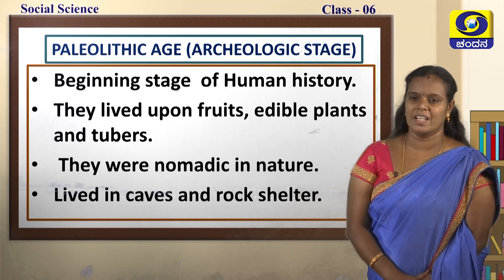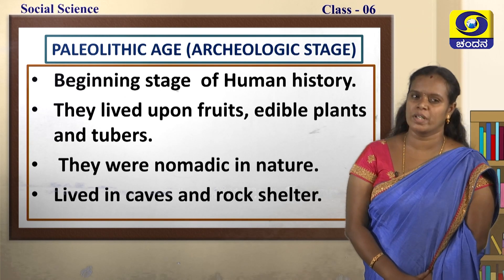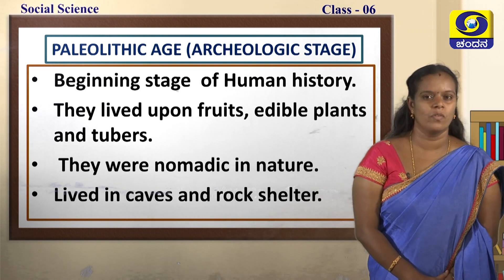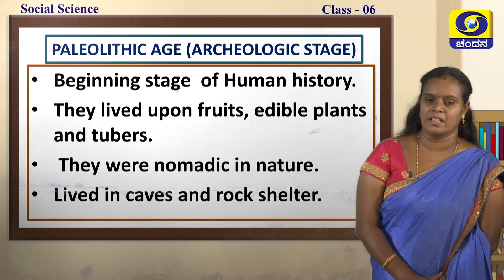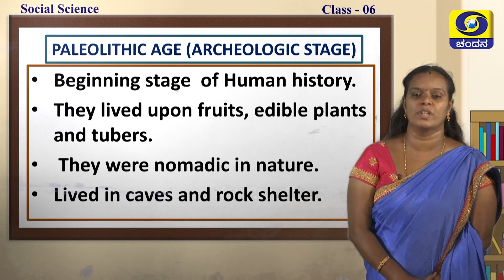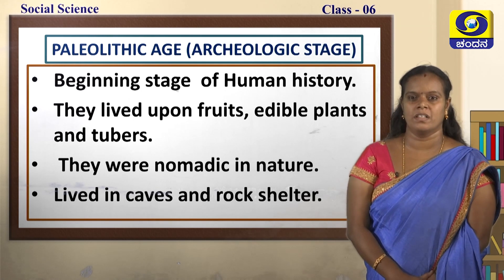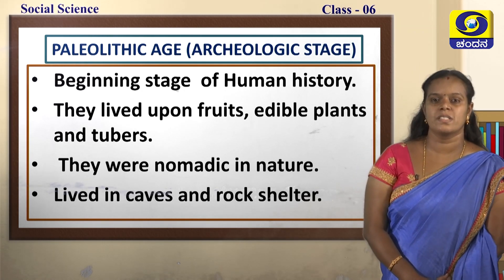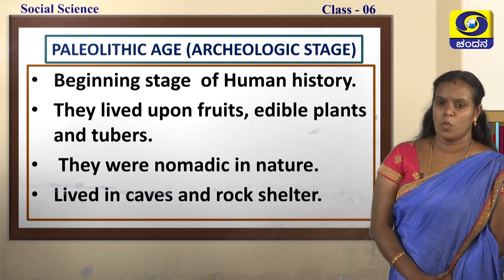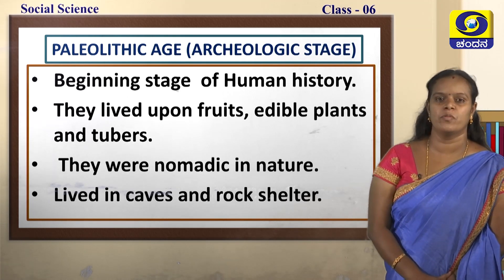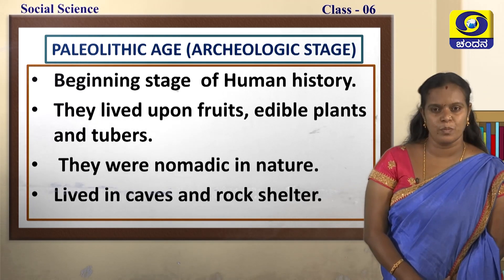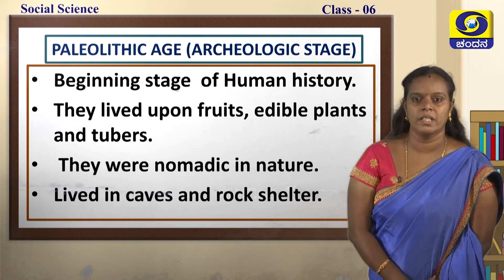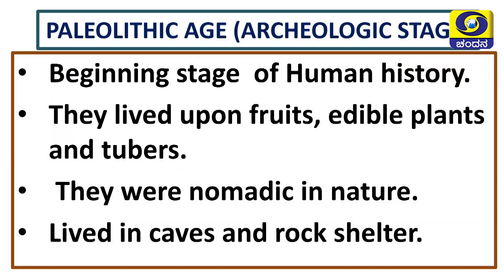This stage is also called the archaeological stage. Archaeology is the scientific study of remains and monuments like pots, jewels, etc. As there are no written records for this period, scientists study the monuments or remains available. This is the beginning stage of human history. The man of the Paleolithic age lived upon fruits, edible plants, and tubers. Edible plants are those naturally available in nature and suitable for human consumption. Tubers are the root or stem parts of plants.